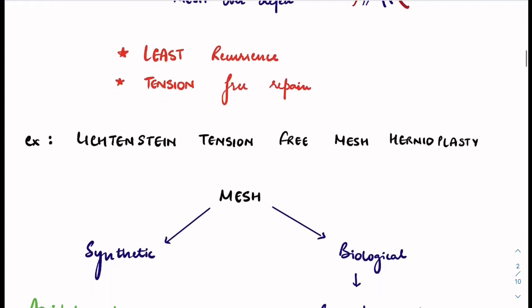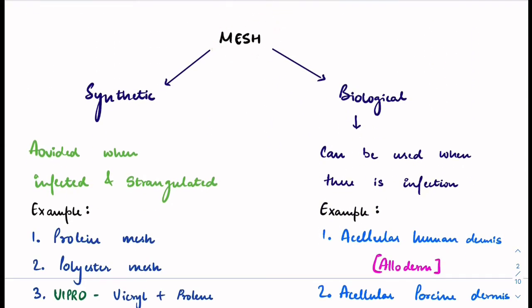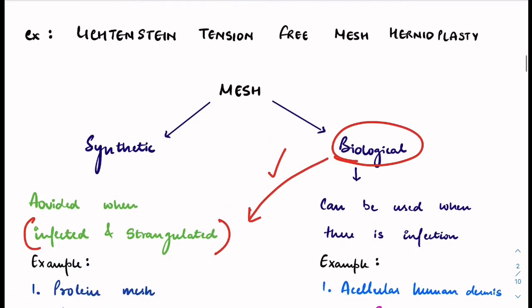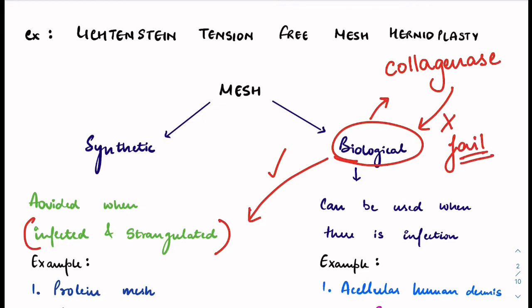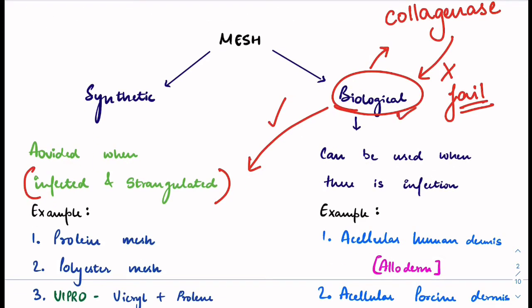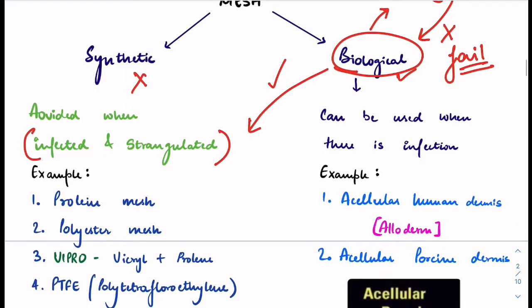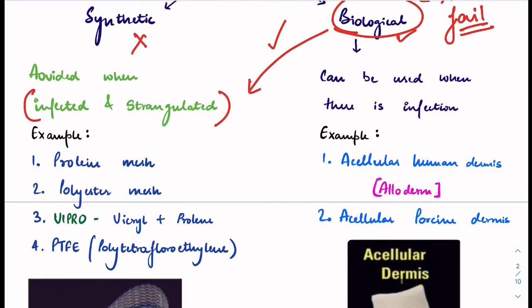Mesh can be of two types: synthetic and biological. Synthetic mesh is avoided in infected and strangulated hernia, but biological mesh can be used. However, in infection or strangulation, there is enzyme release — collagenase — which can also destroy the biological mesh and cause it to fail. So biological mesh can be used but may fail; synthetic mesh cannot be used in infected or strangulated cases.